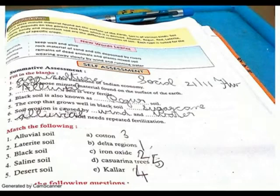Alluvial soil is very fertile. Black soil is also known as regur soil. The crop that grows well in black soil is sugarcane.